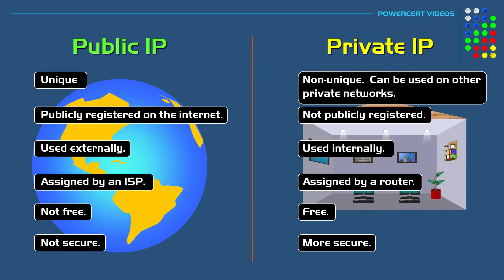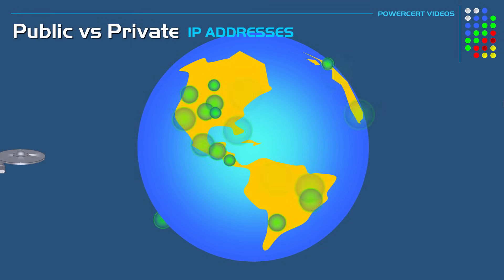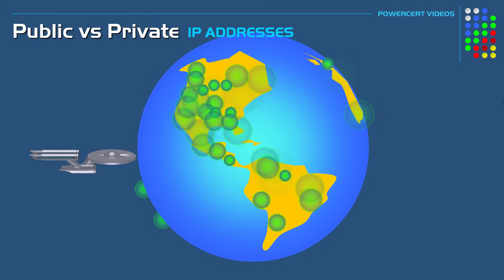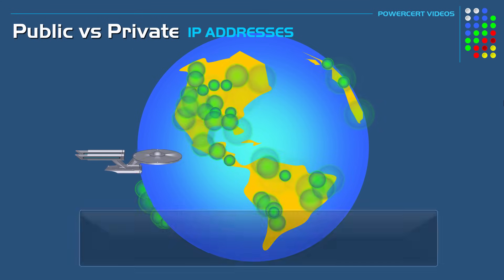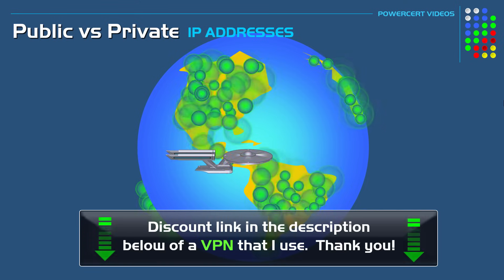Private IP addresses are more secure because they are hidden from the internet — they cannot be traced outside of their own network since they are used internally. Now even though private IPs are used internally, they still have to be translated to a public IP when you want to go on the internet, which means your public IP is exposed. So if you want to surf the internet with privacy and security, you need to use a VPN.